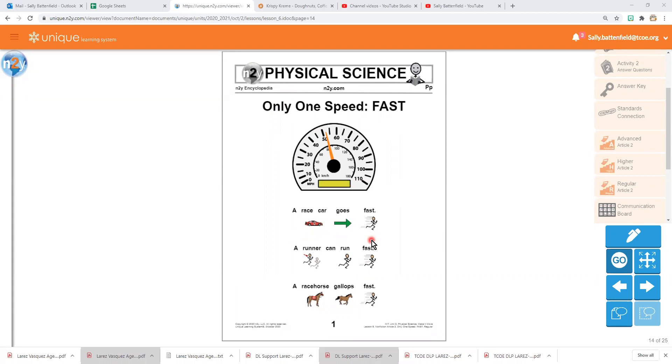A race car goes fast. A runner can run fast. A race horse gallops fast.